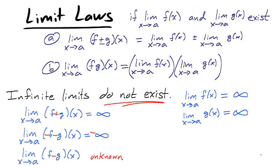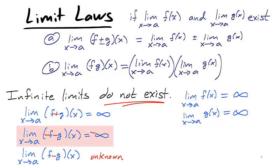Suppose that the limit of f as x approaches a is positive infinity, and the limit of g as x approaches a is positive infinity. This means that both functions have unboundedly large y values as x approaches a. The limit of the sum of f and g can be described as positive infinity. If two functions have larger and larger y values as x approaches a, then their sum will also have larger and larger y values. Similarly, the limit of the sum of negative f and negative g can be described as negative infinity. The limit of the difference of f and g, however, is not able to be determined.